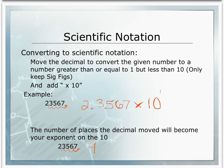Our exponents will be positive for large numbers — 23,000 is a large number. Any number greater than 10 will have a positive exponent. Our small numbers, or any number less than 1, will have a negative exponent. So it's important to note that when we are putting numbers into scientific notation, we know whether our exponents should be positive or negative.